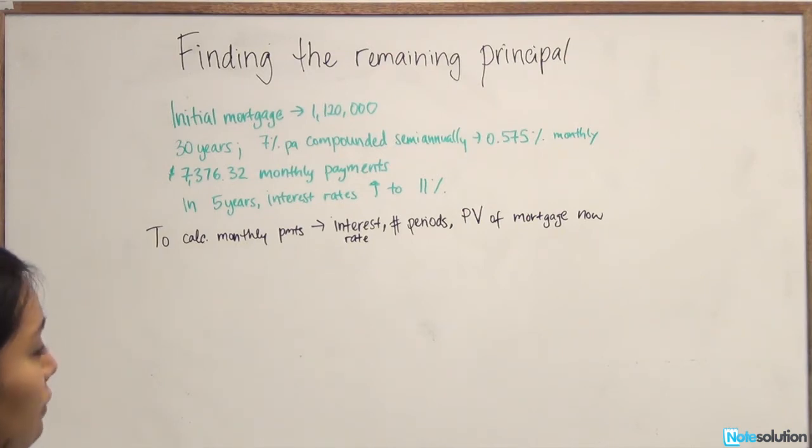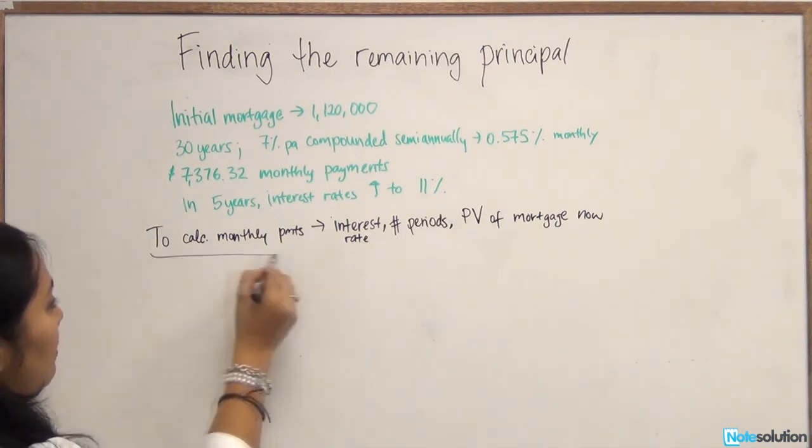And we can easily convert that to months by multiplying it by 12. What is the present value of the mortgage now? Well, that's the remaining principal. That's something we actually don't know. So we're going to calculate the remaining principal before we can calculate the new monthly payments.